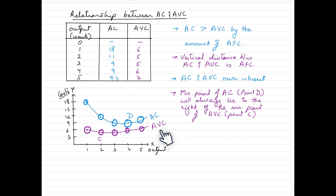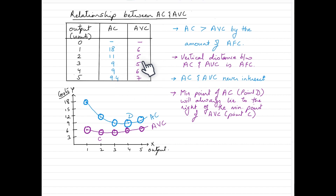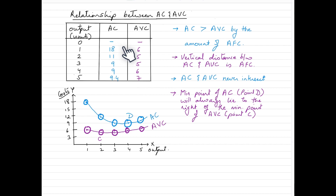Looking at the relationship, throughout the figures the values for AC are greater than AVC. This is simply because AC has two components: AFC, which is average fixed cost, and AVC, which is average variable cost. So AC will always be greater than AVC because of the existence of the fixed cost component in it.